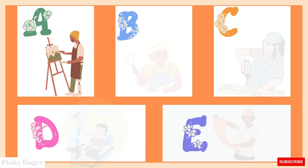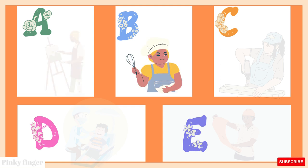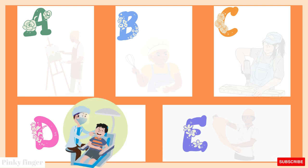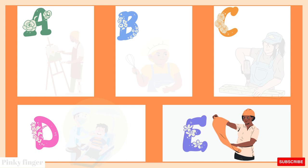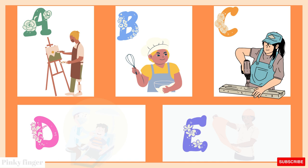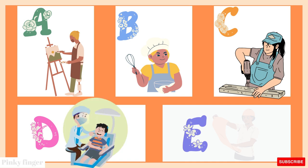A is for Artist. Artist. B is for Baker. Baker. C is for Carpenter. Carpenter. D is for Dentist. Dentist. E is for Engineer. Engineer. A is for Artist. B is for Baker. C is for Carpenter. D is for Dentist. E is for Engineer.